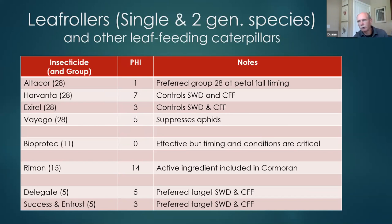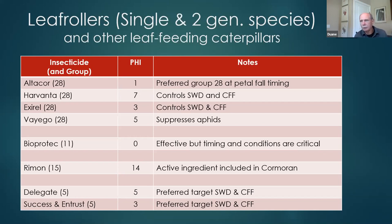We don't see as much of that population as we did maybe 10 to 15 years ago, so we've perhaps backed off on leaf roller control at petal fall, which is when the single-generation species start to emerge. The single-generation species overwinters as eggs and comes out around petal fall timing. It's worth monitoring for those to see if they may be building up, because we don't control that single-generation species with the summer sprays.